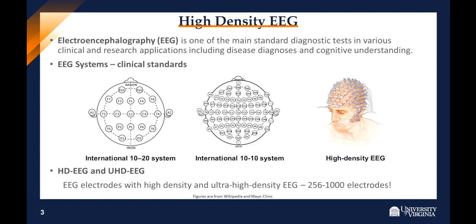The left figure shows the International 10-20 system. The middle one has a higher density of electrodes, which is called the 10-10 system. They are the two common electrode placement methods with the names of all electrodes shown on the scalp. The 10 and 20 refer to the fact that the actual distances between adjacent electrodes are either 10% or 20% of the total front-back or right-left dimension of the skull.